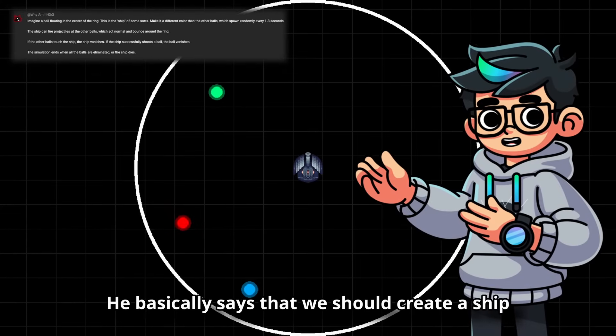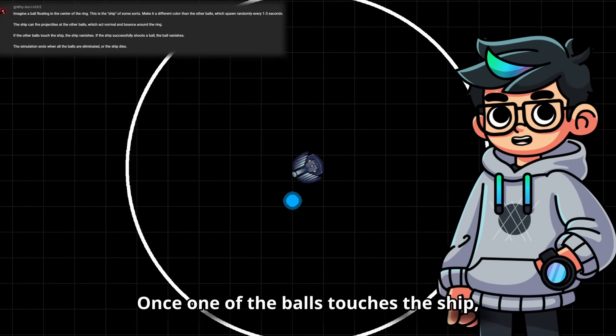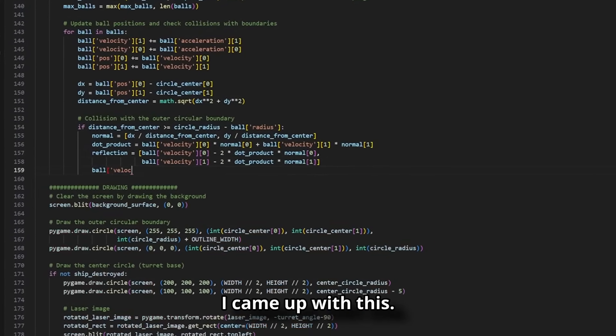He basically says that we should create a ship that shoots at balls trying to reach it. Once one of the balls touches the ship, the ship gets destroyed. So, after a while of programming, I came up with this.